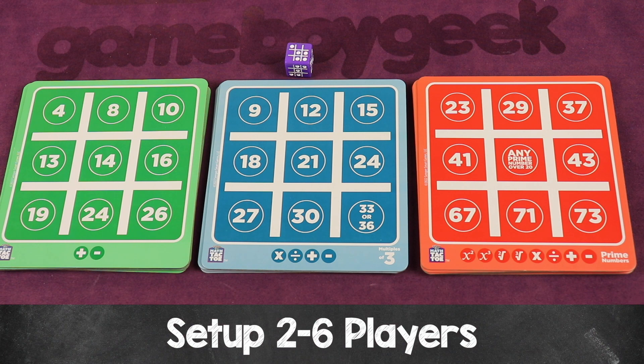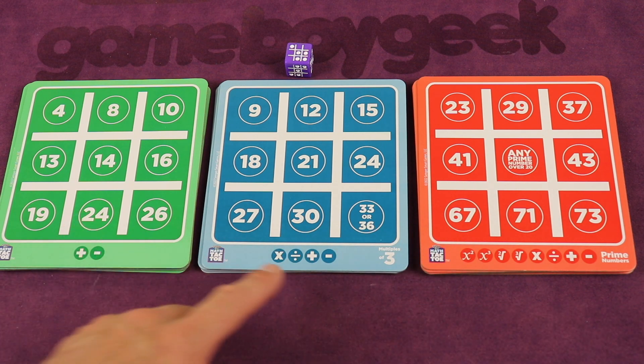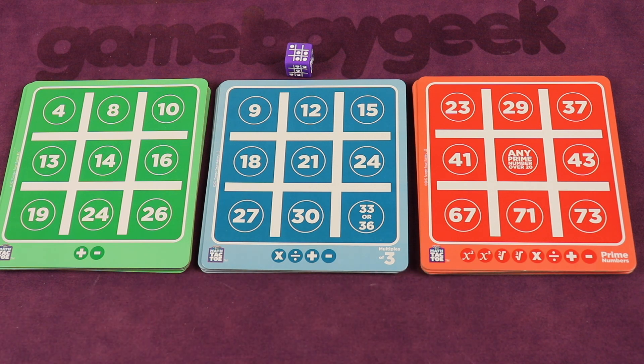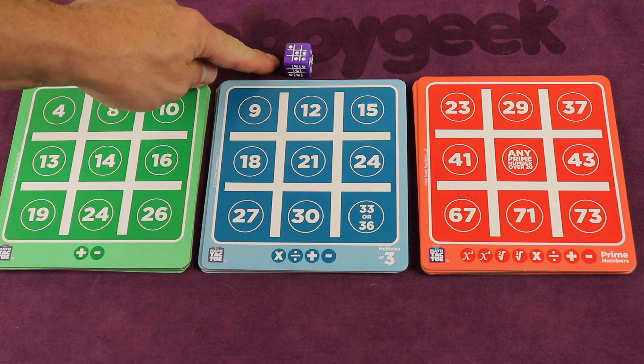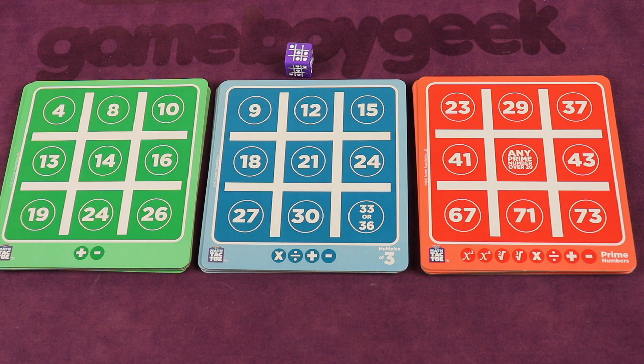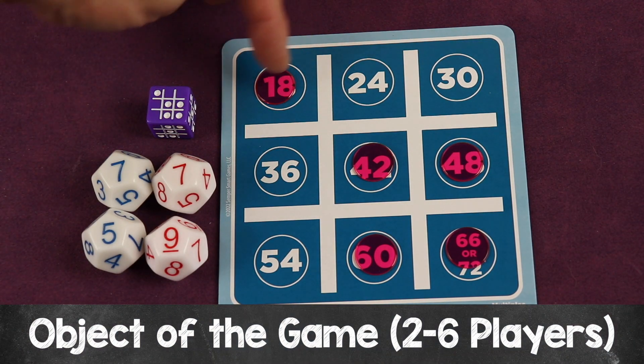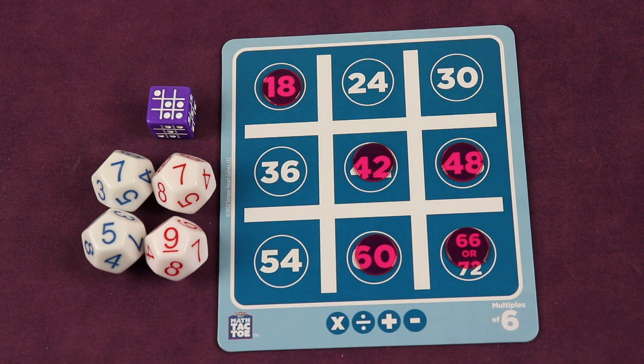Now we're going to go over the two to six player version when you're playing on your own grid. Each player selects a grid of the difficulty level appropriate for them. You could be using the same color as other players or a different one depending on your abilities versus the other players. One player also takes this pattern die and rolls it. This is going to show you how you win the game for this specific game. The object is to match the pattern on your grid—the first person to do that wins.